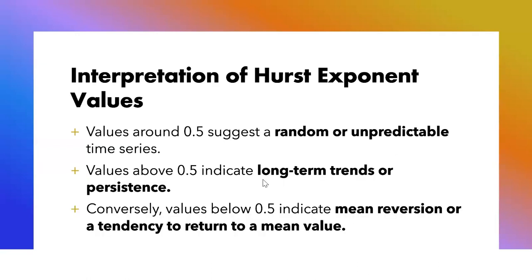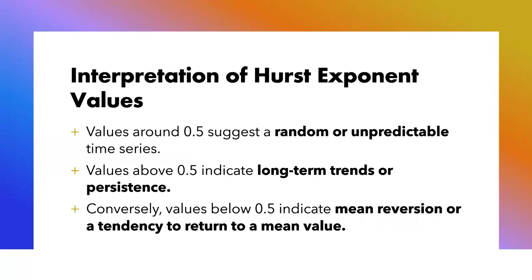How do we interpret Hurst Exponent values? Values around 0.5 suggest a random or unpredictable time series — past values do not impact future values, aligning with the efficient market hypothesis. If the value is above 0.5, it shows persistence and trending, with high values followed by high values or low values followed by low values, indicating momentum or trend-following behavior. Conversely, if the Hurst Exponent is less than 0.5, it means mean-reverting behavior, with high values followed by lower values and vice versa, suggesting a tendency to revert to the mean.